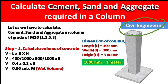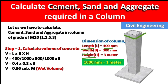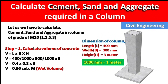Hello guys, welcome to the Civil Engineering YouTube channel. In this video, we will talk about how to calculate the cement, sand, and aggregate required in a column. We have a column with length 400 mm, width 300 mm, and height 3 meters. I have symbolized all the dimensions as L, B, and H.